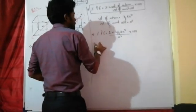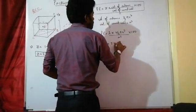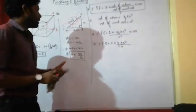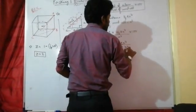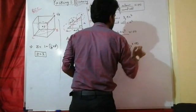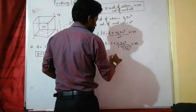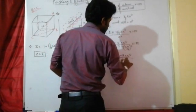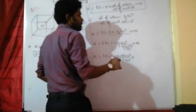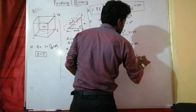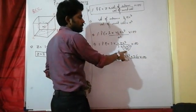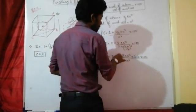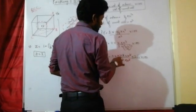Now substituting A = 4R/√3, so A³ = (4R/√3)³. Percentage packing efficiency = 2 × (4/3)πR³ / (4R/√3)³ × 100. Simplifying: R³ cancels, 4 and 4 cancel, leaving π√3/8 × 100. The denominator becomes 3×√3, so the result simplifies to π√3/8 × 100.